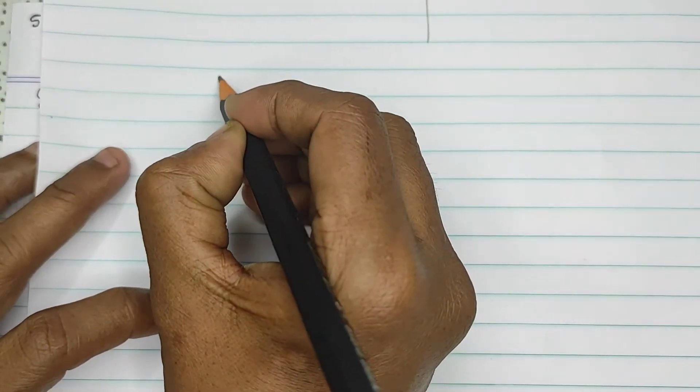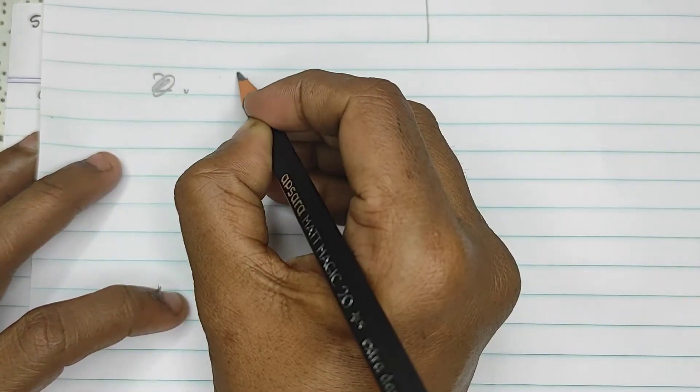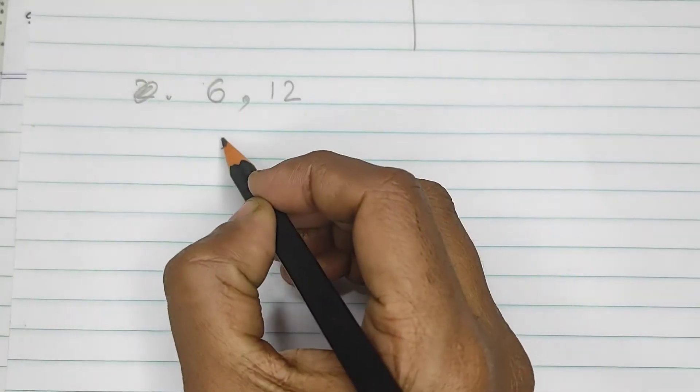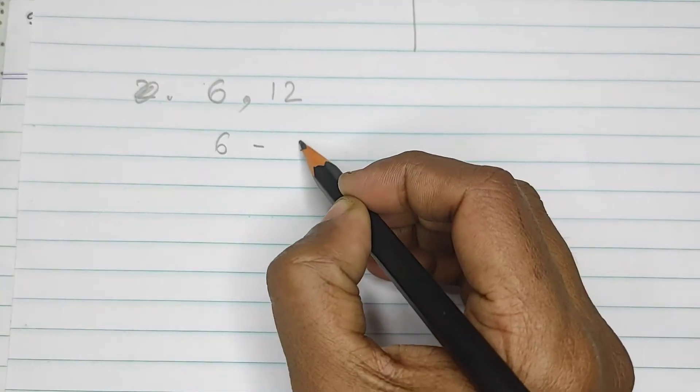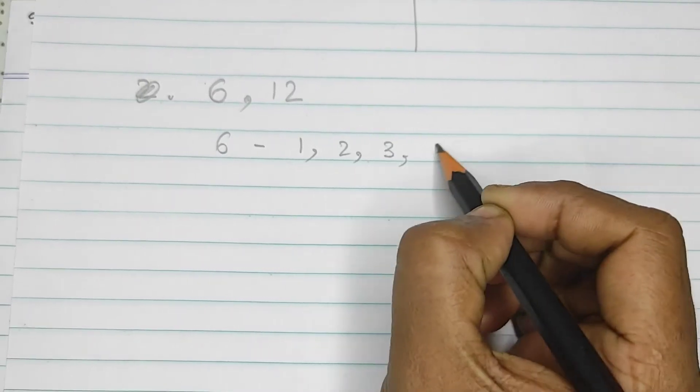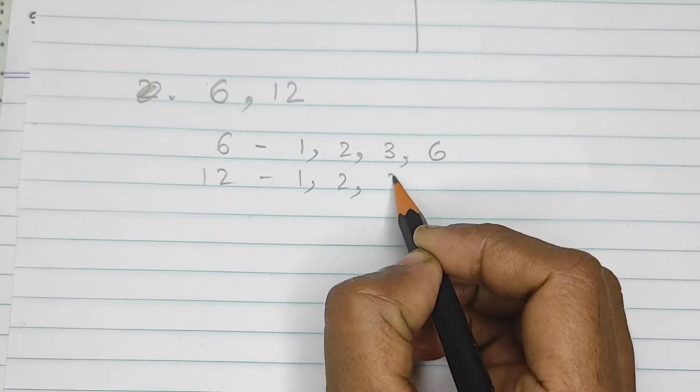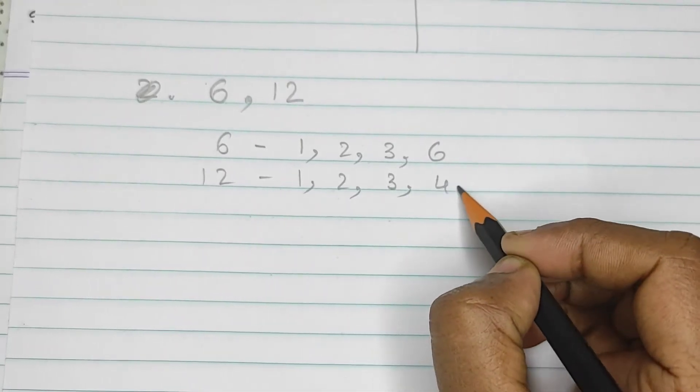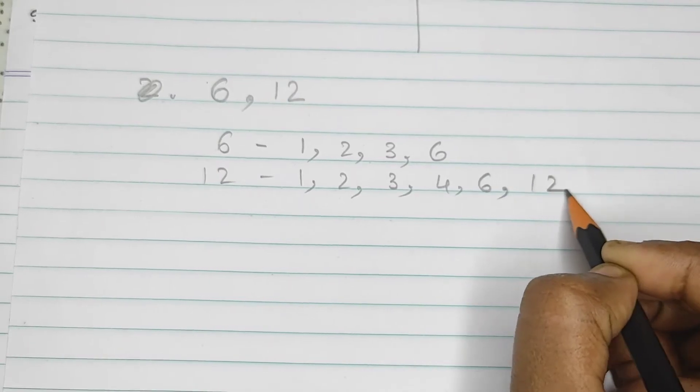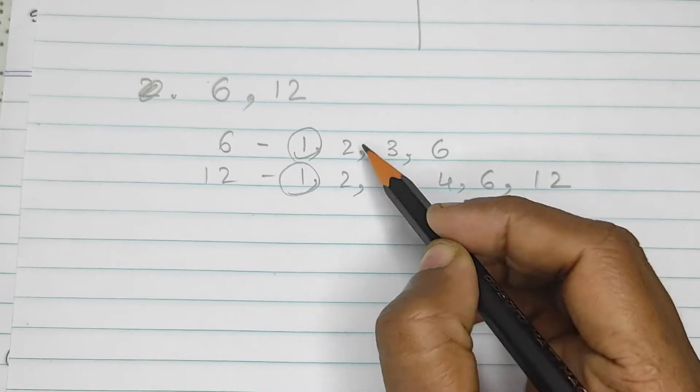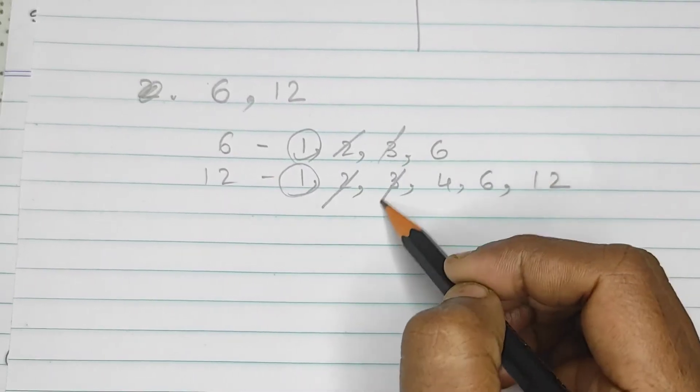Co-prime number ka matlab, for example, let's take 6 and 12. So, 6 is divisible by 1, 2, 3 and 6, and 12 is divisible by 1, 2, 3, 4, 6 and 12. So, when we find the common numbers, apart from 1, we will get 2, 3, and 6.